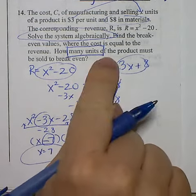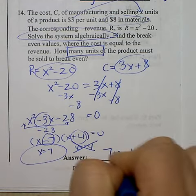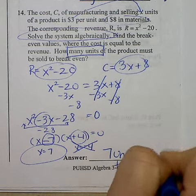How many units of the product must be sold? 7 units of the product, in order for them to break even.